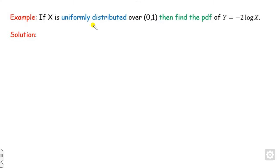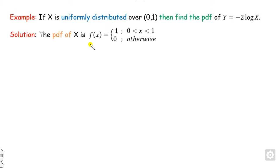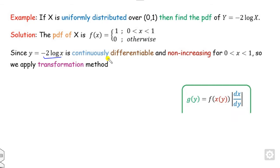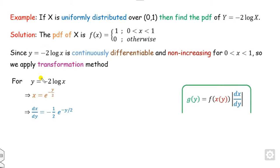Example 7: if X follows a uniform distribution, find the pdf of Y = −2 log(X). The pdf of X is calculated, and the transformation −2 log(X) is continuously differentiable. Calculate x = e^(−y/2) and dx/dy. When x lies between 0 and 1, y lies between 0 and infinity. Since dx/dy is always positive, the modulus sign is not needed. Substituting the values, the pdf of Y is obtained over (0, ∞), otherwise 0. This is the exponential distribution — so if X follows the uniform distribution, then −2 log(X) follows the exponential distribution.